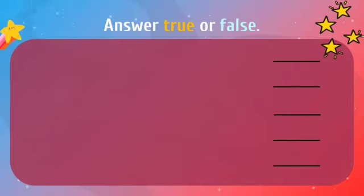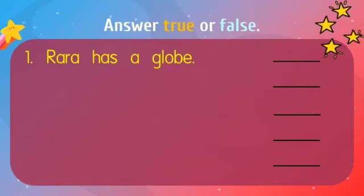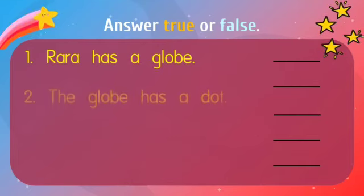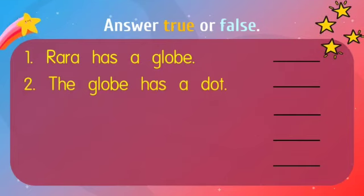After reading the sentences, now you have to write true or false to the questions. The first one is Rara has a globe. Is it true or false? What do you think? The second one: the globe has a dot. Is it true or false? Take a look again at the page. Read the second sentence: the globe has a hole. So what's the answer?